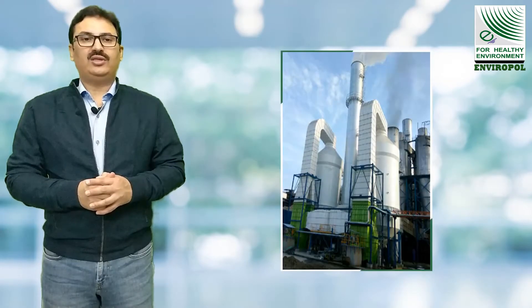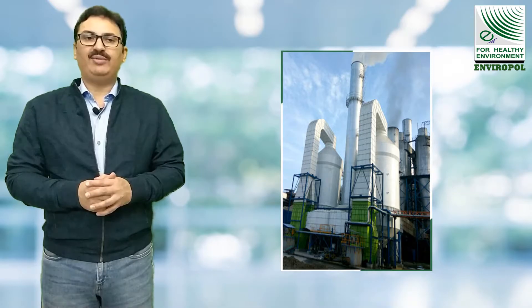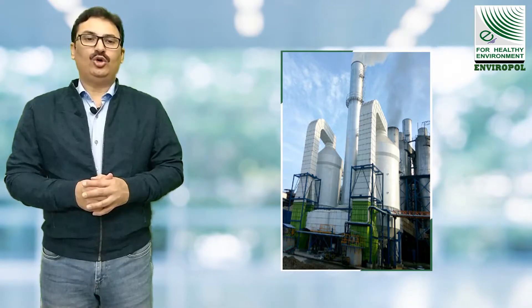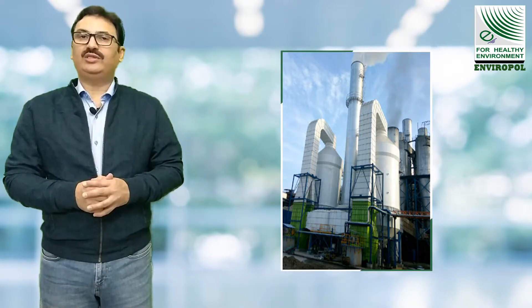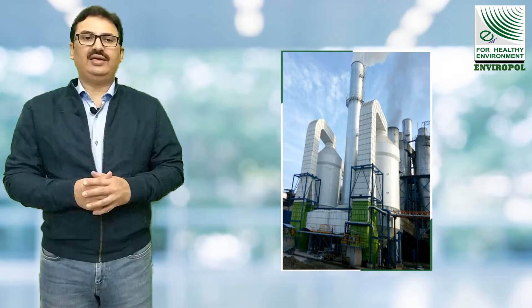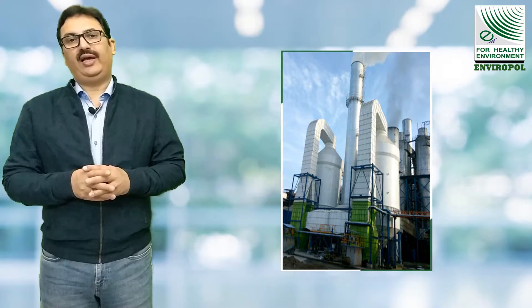The most common technologies to remove SO₂: number one, wet scrubbing using slurries of alkaline solvents such as limestone, lime, caustic, and sea water to scrub the gases. This category is called wet flue gas desulfurization, or wet FGD.